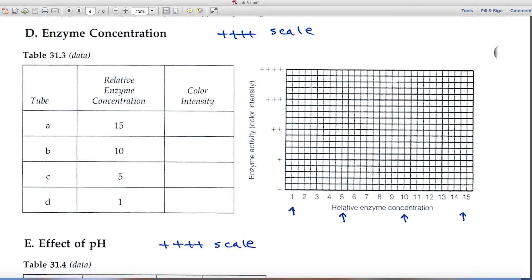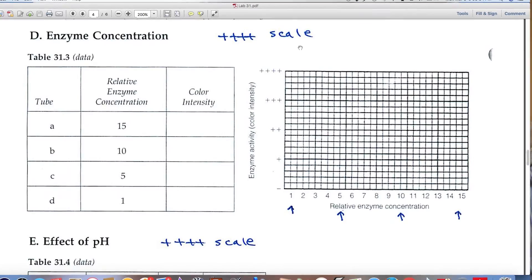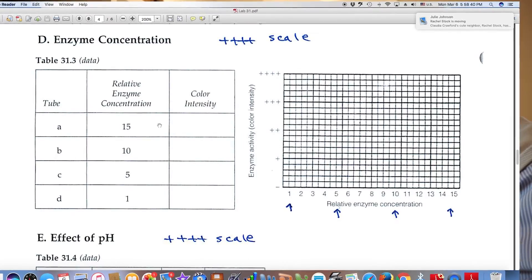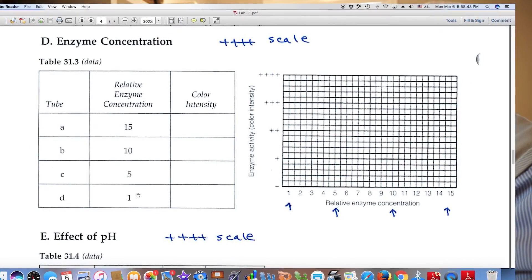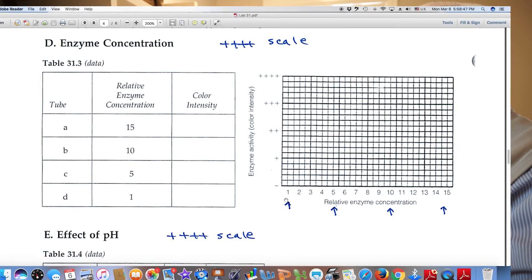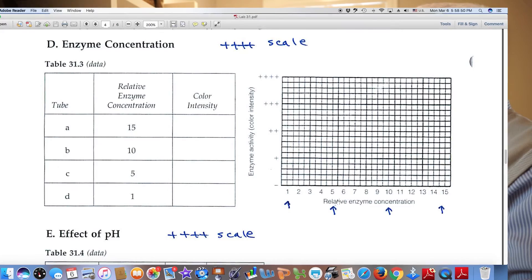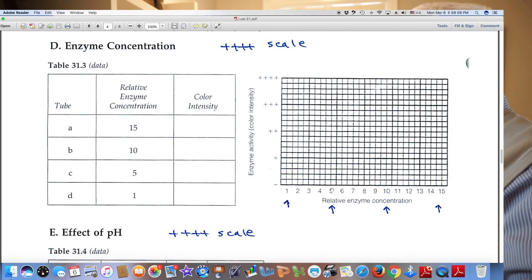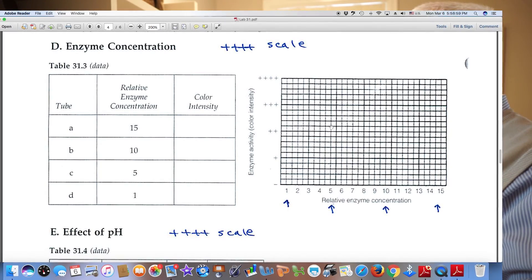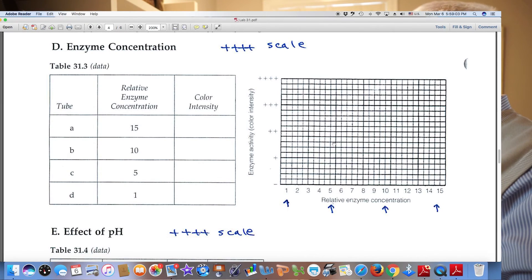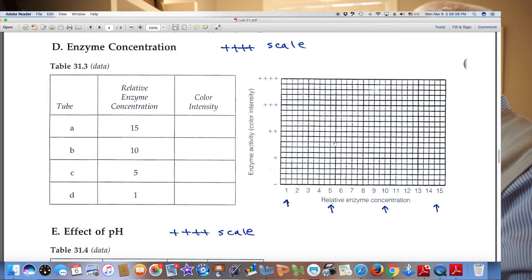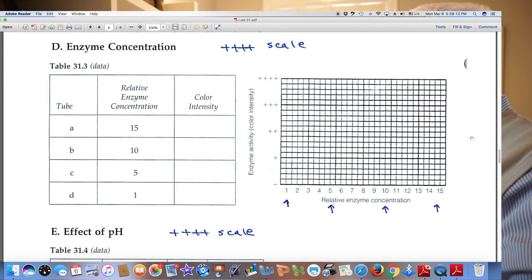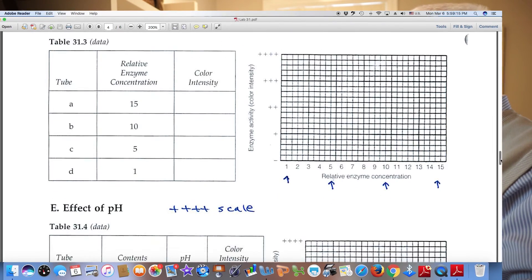Part D, looking at enzyme concentration, same scale, plus, plus, plus, and color intensity here once again. You have 4 different relative enzyme concentrations, and I've indicated these locations over here in the graph at the right, at 1, at 5, at 10, and 15. So here at 5, for example, you'd go up with a hypothetical line, you'd come across with the color intensity, whatever it is. You'd place a point at that location, get 4 points on the graph, and again, connect them with a smooth line connecting the points.